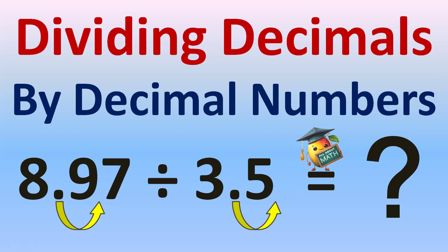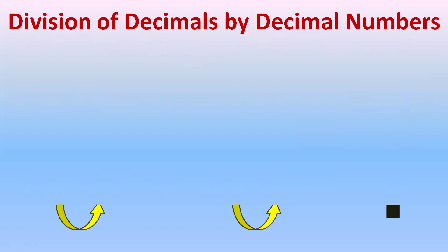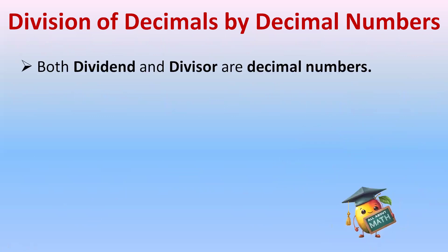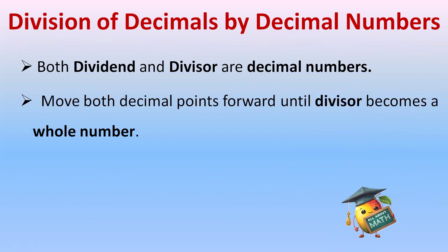Dividing decimals by decimal numbers: In division of decimals by decimal numbers, both dividend and divisor are decimal numbers. Move both decimal points forward until divisor becomes a whole number.